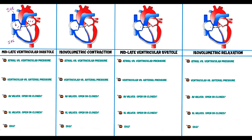To move from atria to ventricles, blood crosses the tricuspid valve on the right and the mitral (bicuspid) valve on the left. These valves are naturally loose because the myocardium is relaxed — the papillary muscles aren't anchoring them via the chordae tendineae — so they're slightly open. This allows blood to passively flow down into the ventricles. Remarkably, 70 to 80 percent of blood passively flows down before the atria have even contracted.